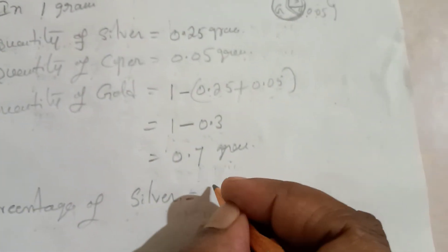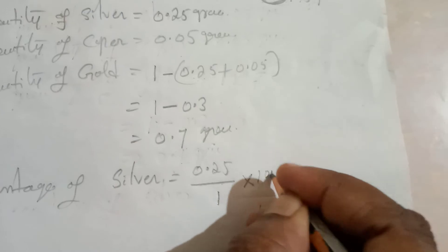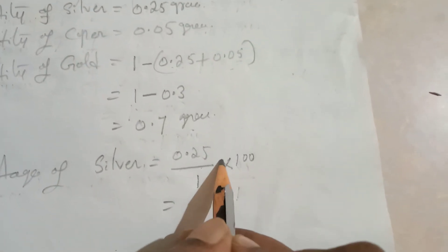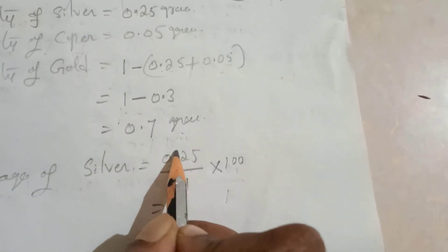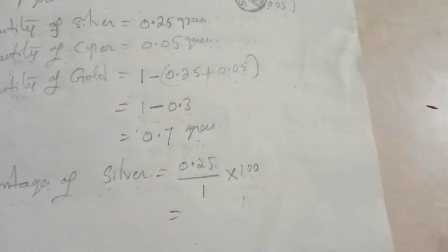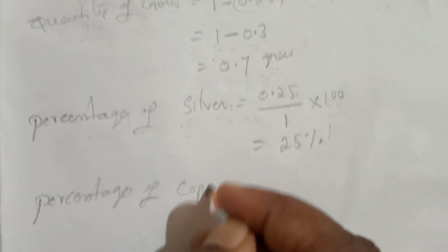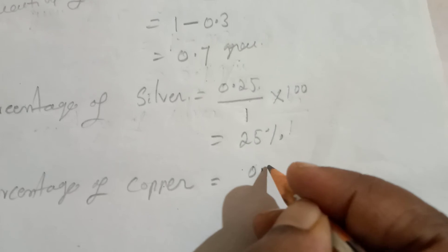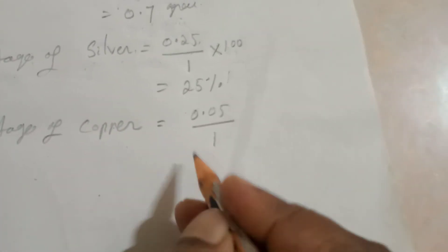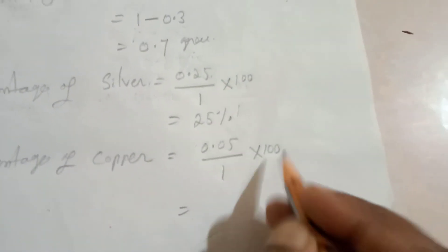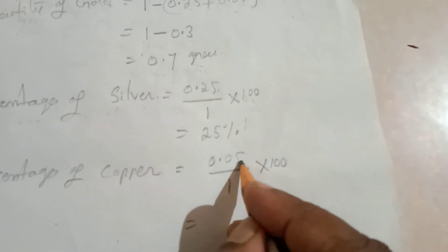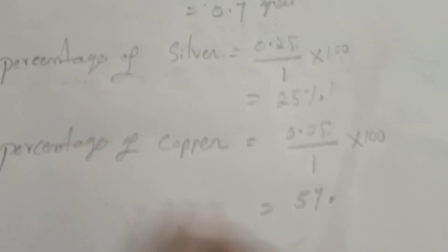Percentage of silver: silver quantity is 0.25 divided by 1 gram, into 100, gives 25%. For copper: 0.05 divided by 1 gram, into 100 — that gives 5%.